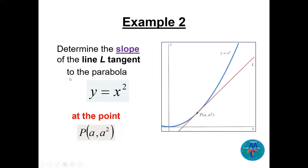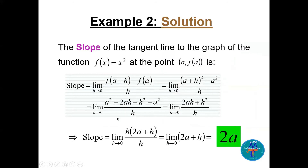Now let's find the slope of the tangent line to the parabola y = x² at the point (a, a²). We apply the formula: put (a+h) into the function to get (a+h)² minus a², divided by h. Expanding: a² + 2ah + h² − a², then cancel a², factor out h, and cancel it. We get the limit of (2a + h) as h→0, which gives slope = 2a.